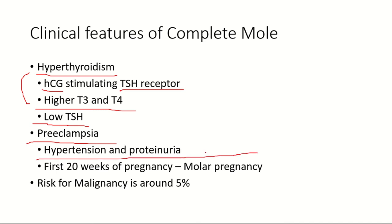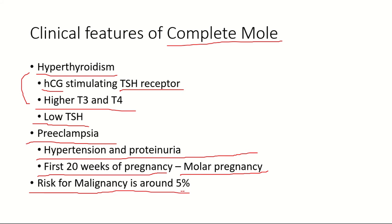There can also be preeclampsia — hypertension, proteinuria, and edema. During normal pregnancy, preeclampsia usually occurs in the third trimester, but if it is seen during the first 20 weeks of pregnancy, molar pregnancy should be suspected. The risk for malignant progression to choriocarcinoma is around 5% in complete mole.